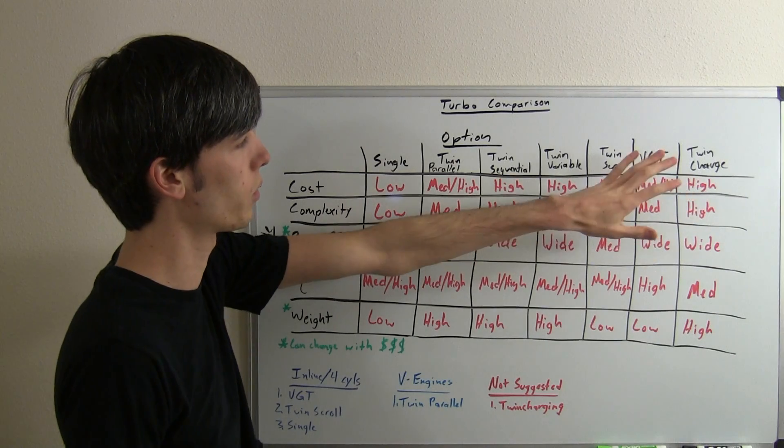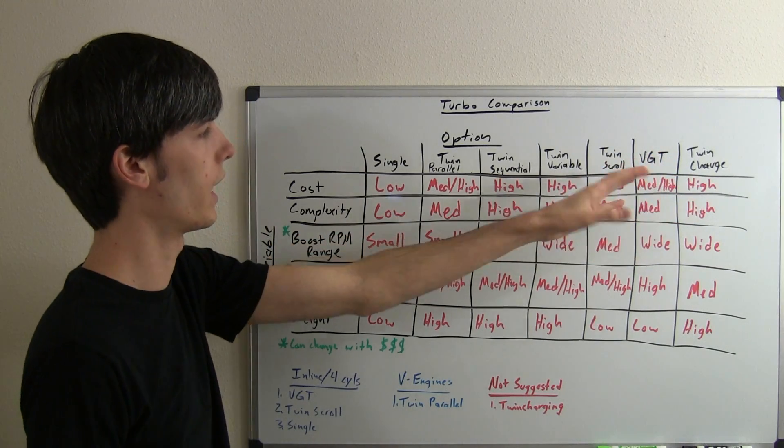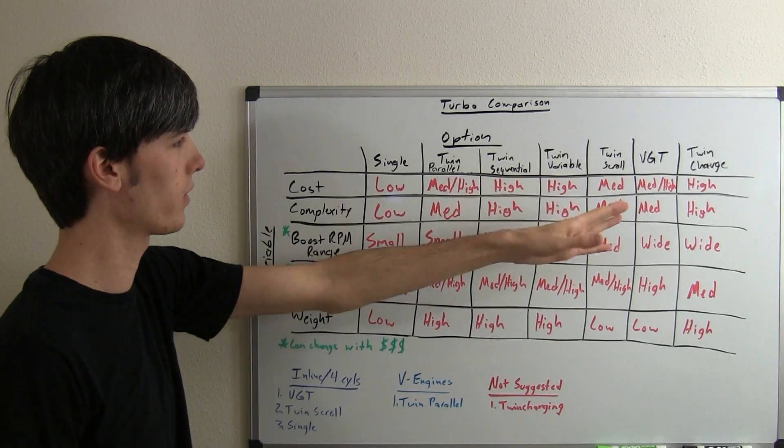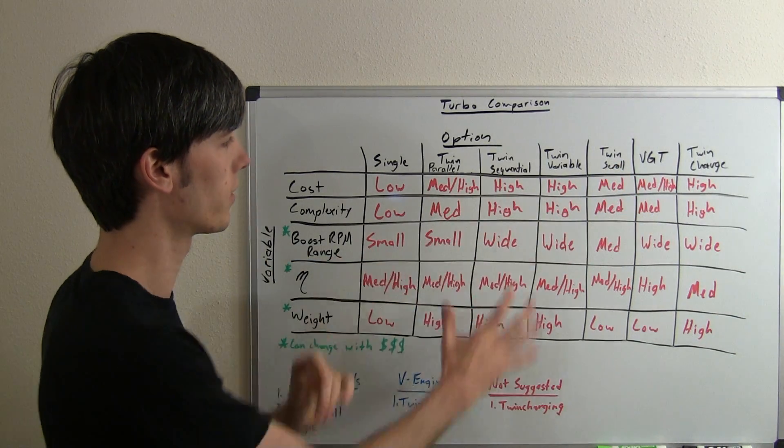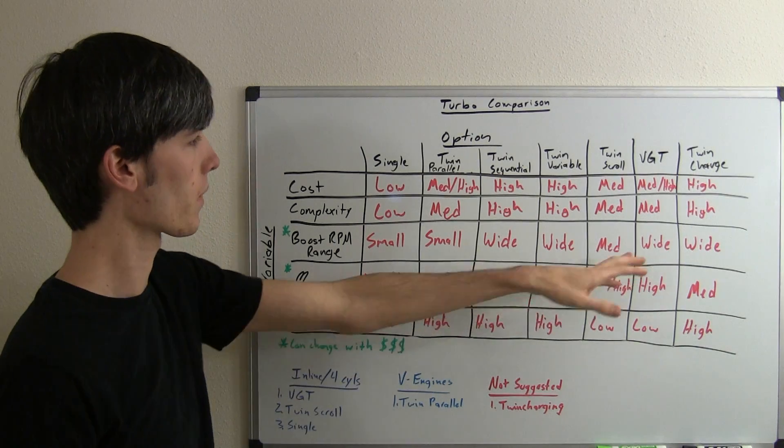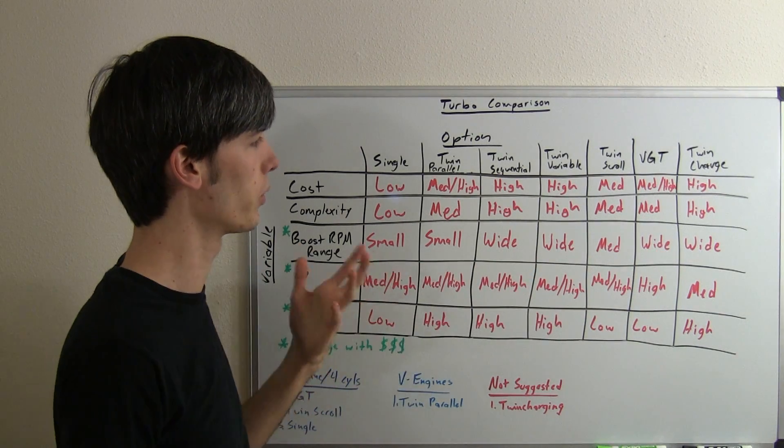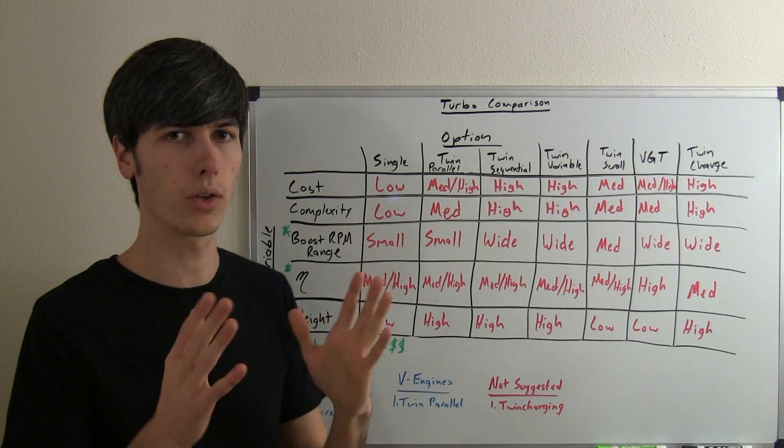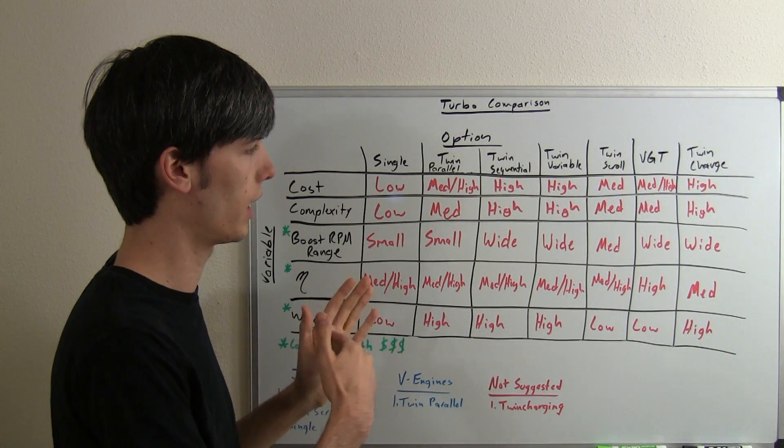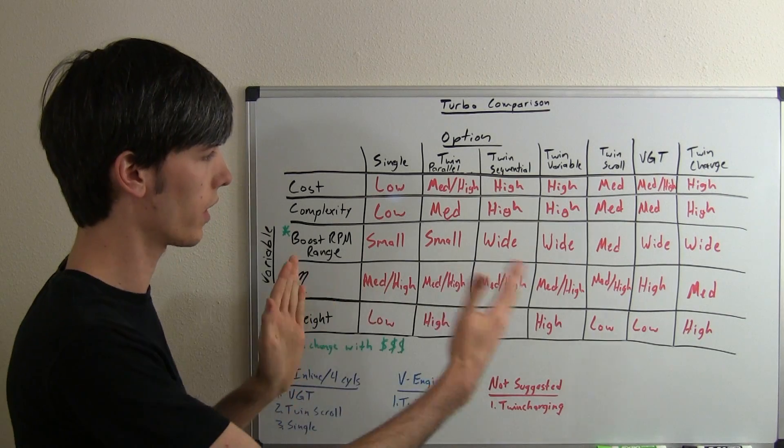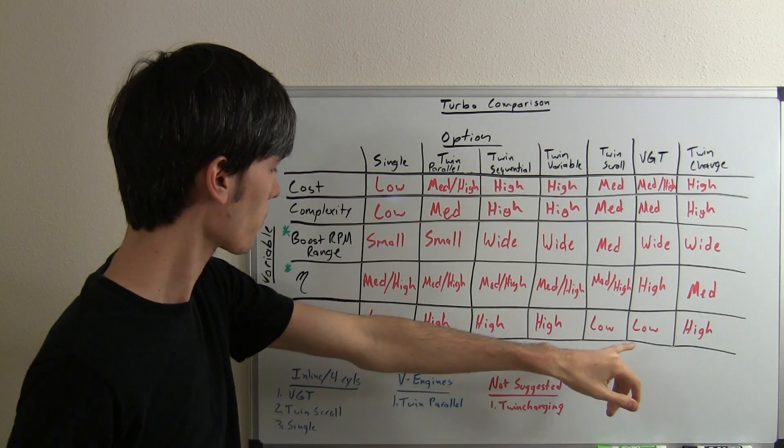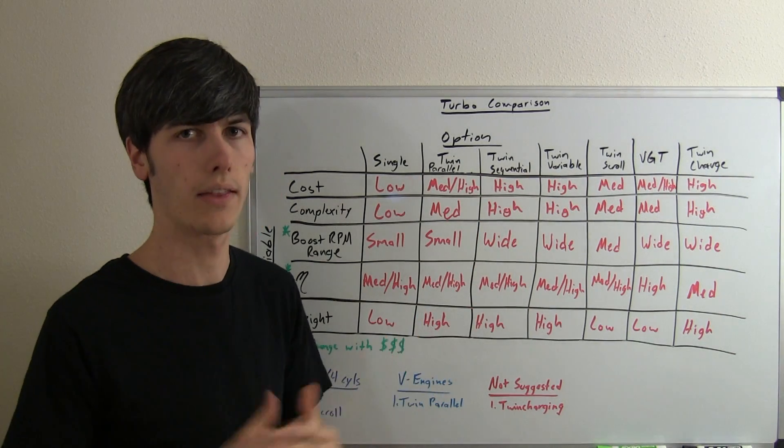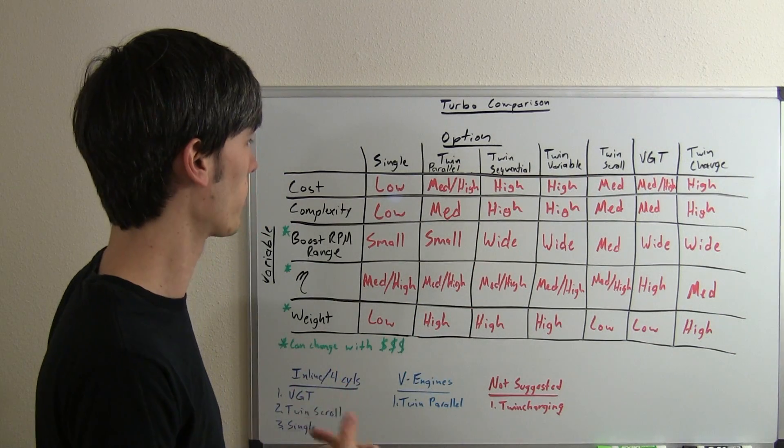Variable geometry turbo, I think this is one of the best options out there. The downside of course is going to be the cost. So fairly expensive, not as complex as some of these where they've got these different valves activating. A wide RPM boost range, which is what you want. High efficiency because you can vary that boost range however you want across the entire RPM band. And then the weight is relatively low, kind of like the single and twin scroll, because you've just got that one turbo. Of course you've got complexity in there, so that's kind of the downside and cost.